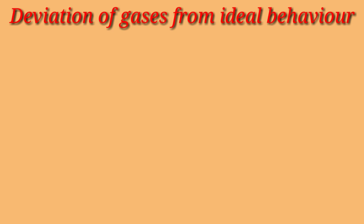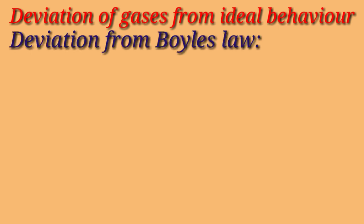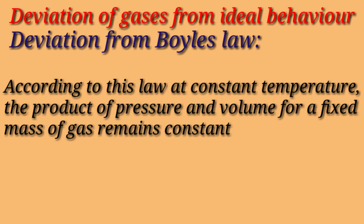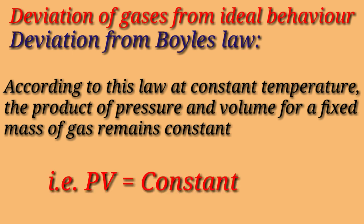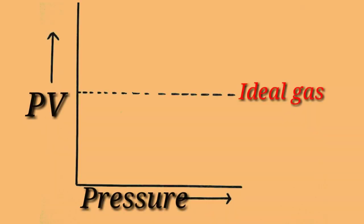The deviation of gases from ideal behavior requires the deviation from each gas law to be studied. First, we'll see deviation from Boyle's law. According to this law, at constant temperature, the product of pressure and volume for a fixed mass of a gas remains constant, that is PV equals constant.